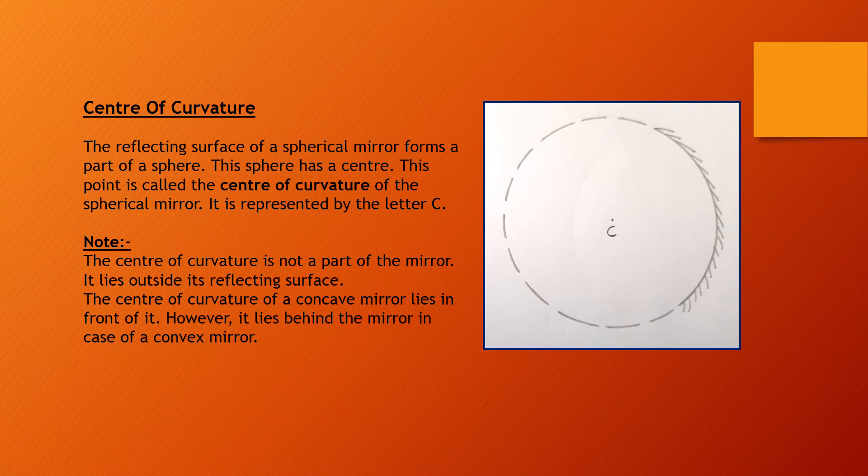The center of curvature of a concave mirror lies in front of it. However, it lies behind the mirror in the case of a convex mirror. The picture here shows a concave mirror, and as you can see, the center of curvature of this concave mirror lies in front of the mirror.